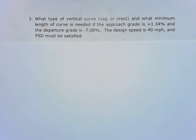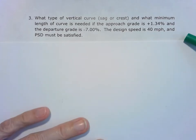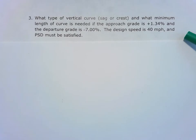On to problem three of the FE highway design homework. What type of vertical curve, sag or crest, and what minimum length of curve is needed if the approach grade is +1.34%, the departure grade is -7%, the design speed is 40 miles per hour, and passing sight distance must be satisfied? So let's figure out what type of curve we're dealing with first.